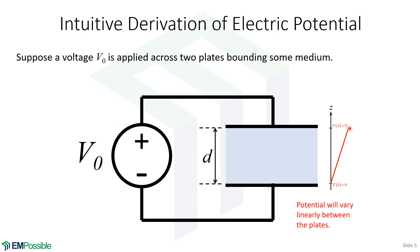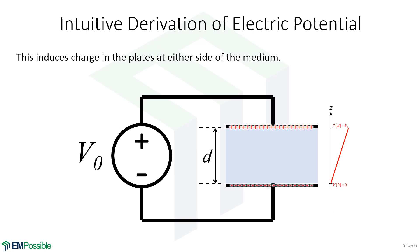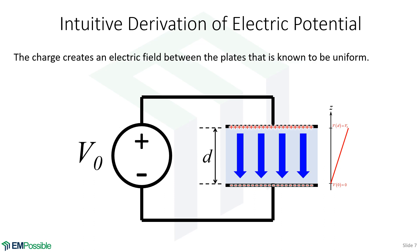The electric potential will vary linearly from the maximum voltage V0 all the way down to zero between the plates. Applying that voltage causes an accumulation of positive charges on the top plate and negative charges on the bottom plate. The electric field will be uniform all the way between the plates, while the electric potential changes linearly from top to bottom.